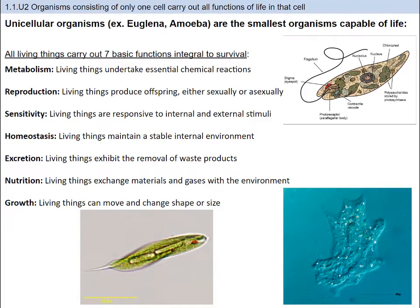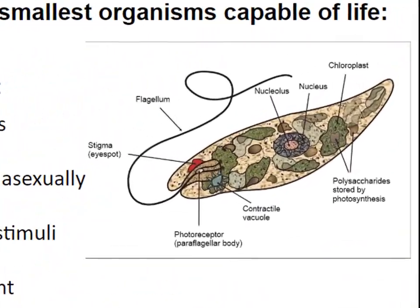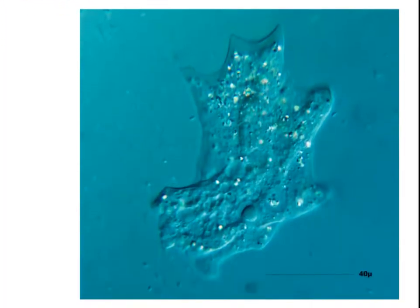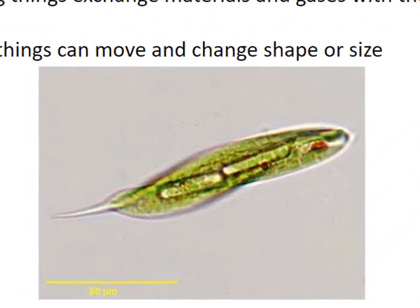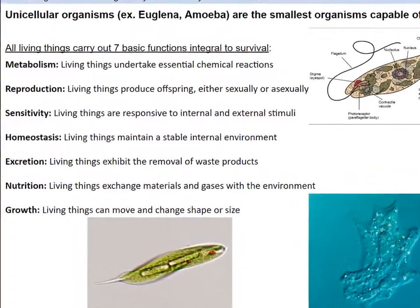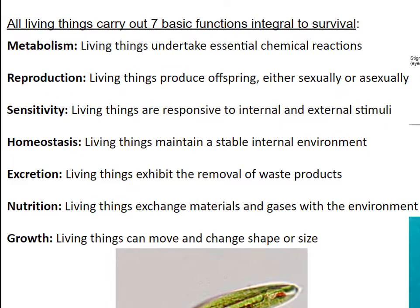What does it mean to be living? Remember that one of the components of the cell theory is that all organisms are composed of cells — really, one or more cells. So in order to be living, the cell or cells need to be able to carry out the functions of life. Scientists have established criteria for what this means. One thing is that to be living, you must have a metabolism, which means that living things undertake essential chemical reactions.